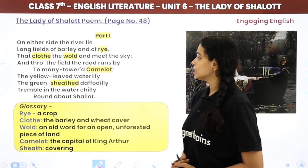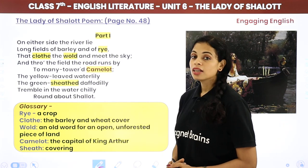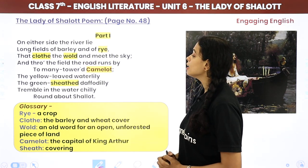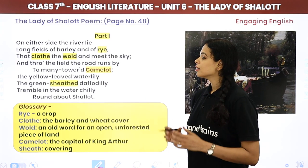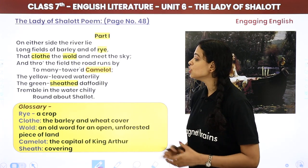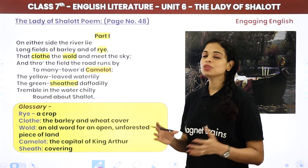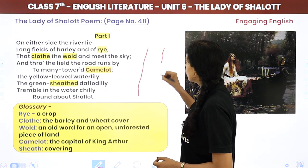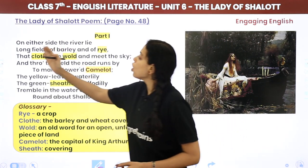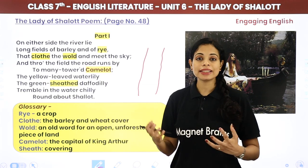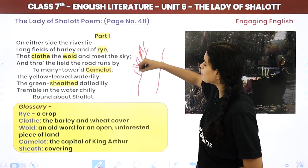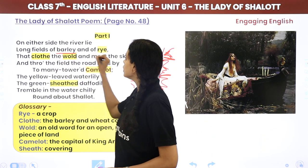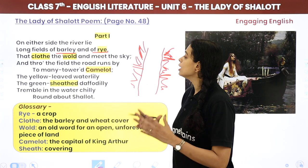Let's start with Part 1. 'On either side of the river lie long fields of barley and of rye, that clothe the world and meet the sky, and through the field the road runs by to many-towered Camelot.' Here the poet describes that on either side of the river, there are long fields of barley and rye — these crops cover the land so completely it feels like they meet the sky.